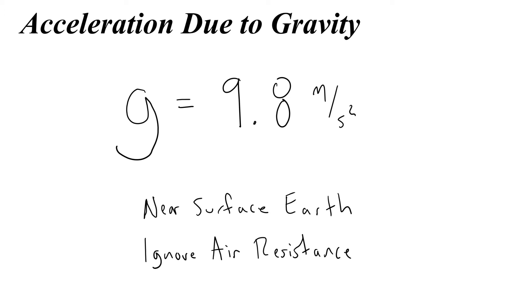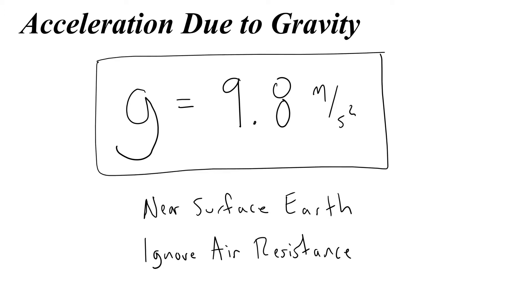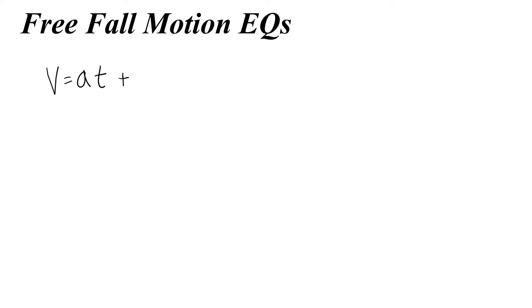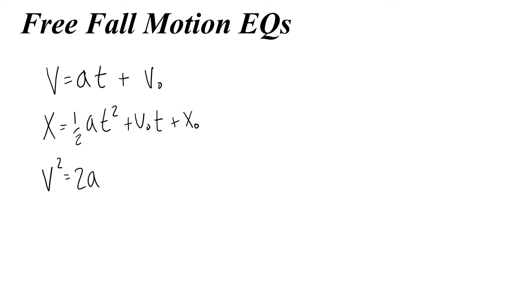This allows us to modify all of our motion equations, since 9.8 m/s² is an acceleration. Starting with the equations that contain acceleration: the final velocity equals acceleration times time plus initial velocity; position equals one-half acceleration times time squared plus initial velocity times time plus initial position. The equation using one-half (v plus v-naught) times t has no acceleration, so it stays the same. And the 'ain't got no time' equation becomes 2 times acceleration times delta-x plus initial velocity squared.